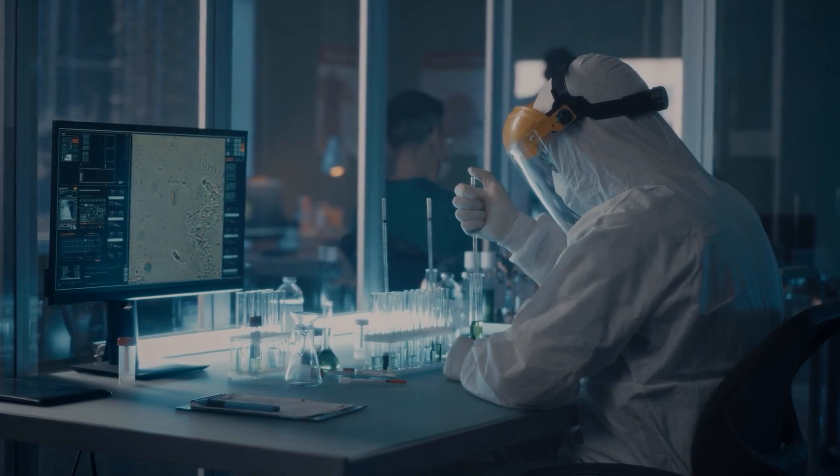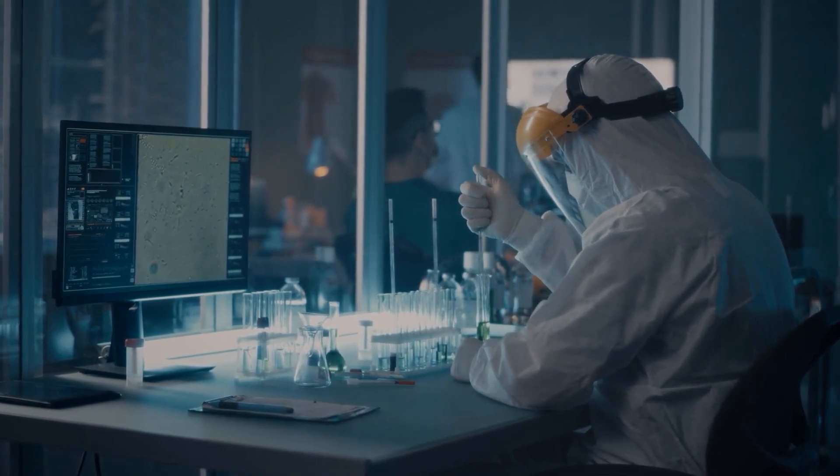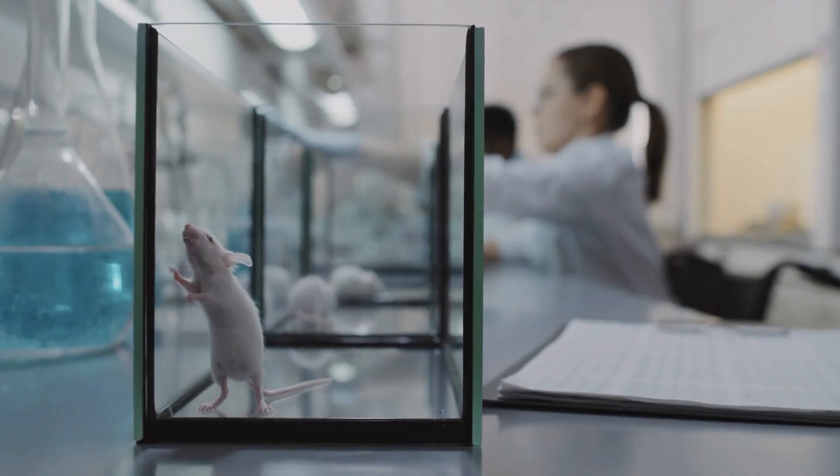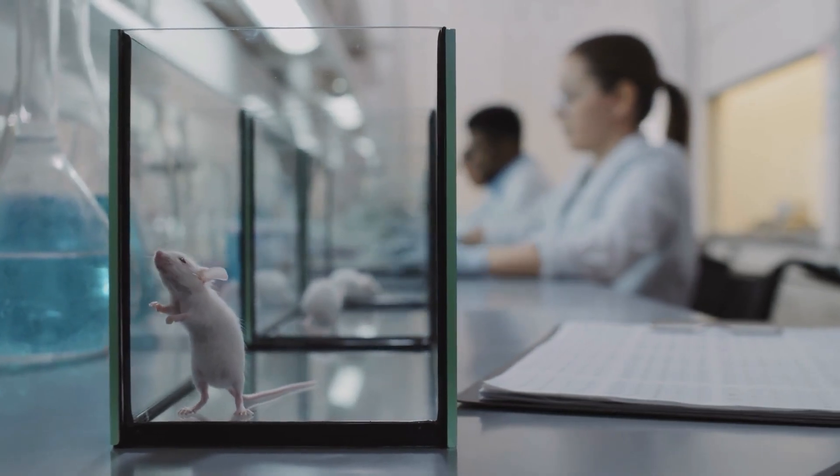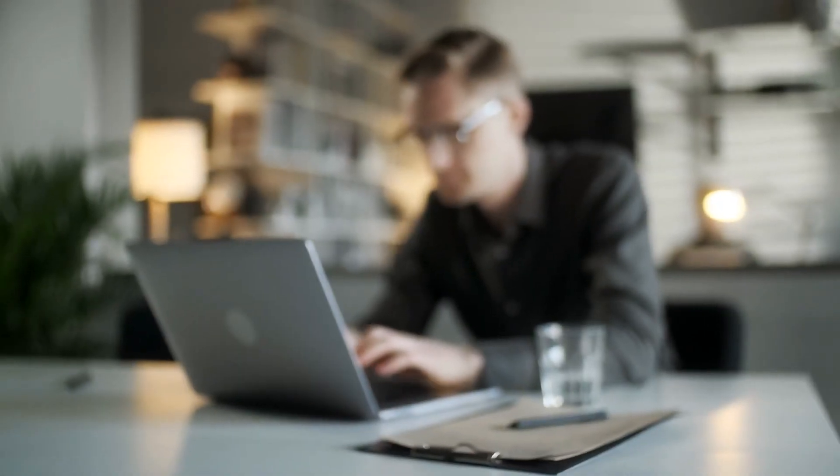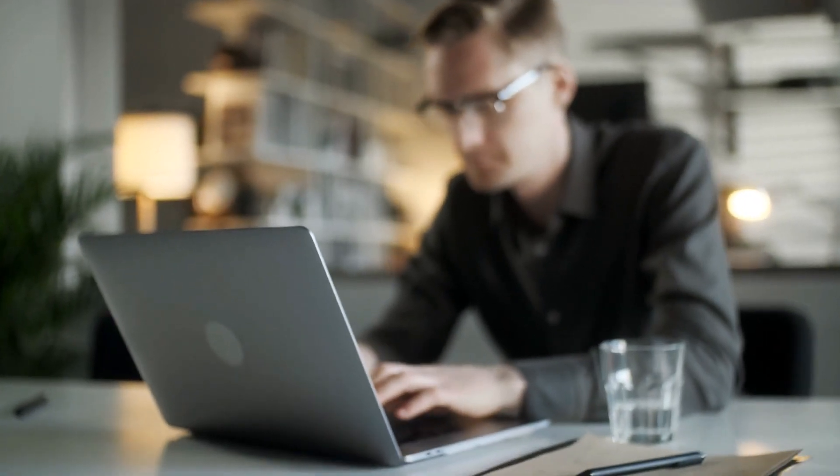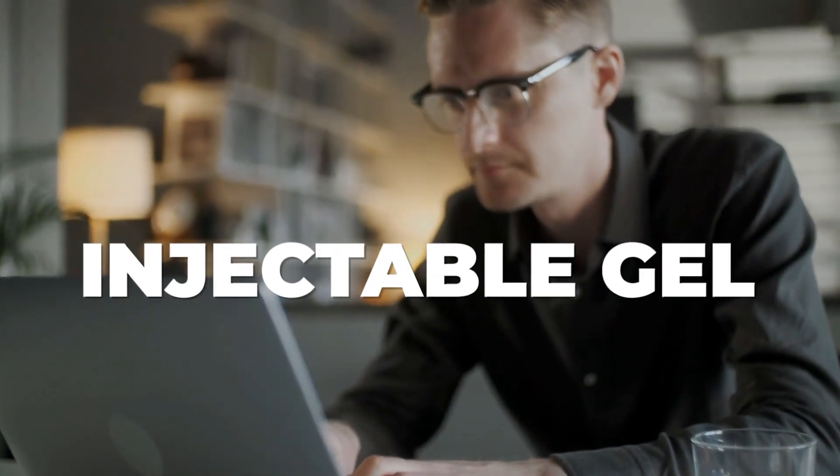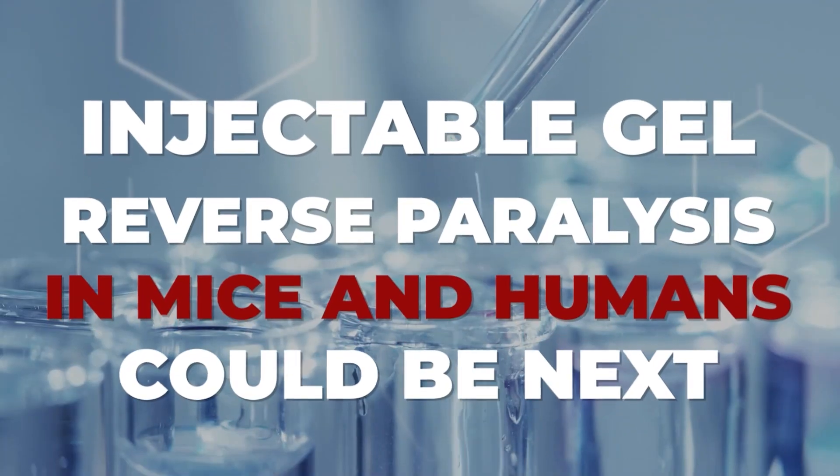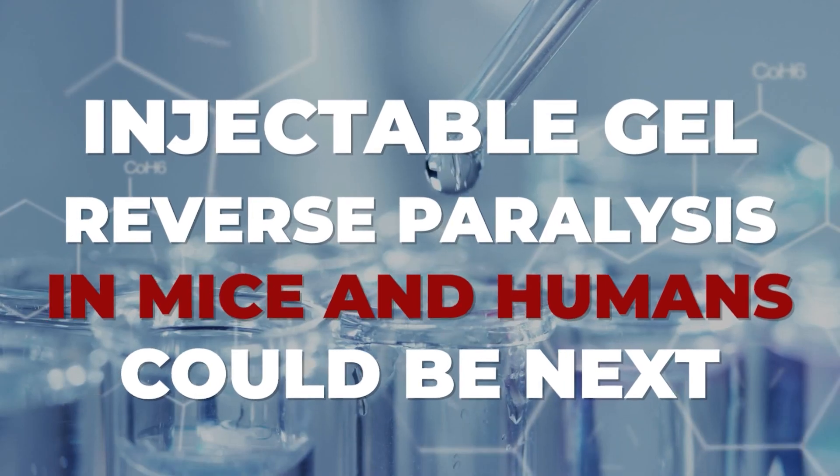His Northwestern University research team discovered an injectable that prevented rats with spinal cord damage from becoming paralyzed. So, for today's video, let's now do our experiment about what this injectable gel, reverse paralysis in mice and humans could be next.